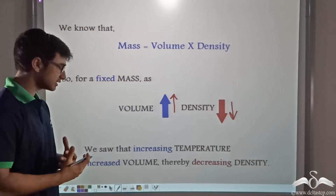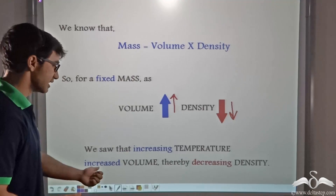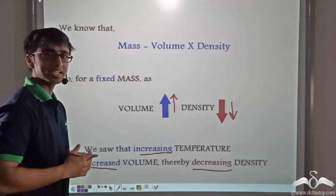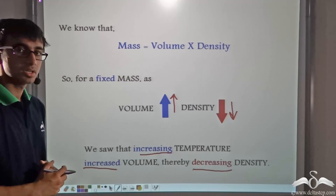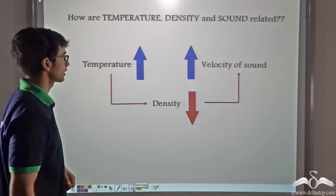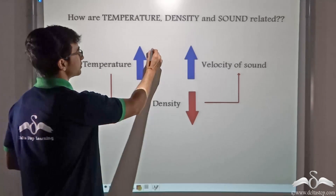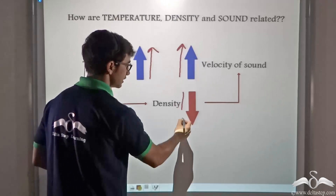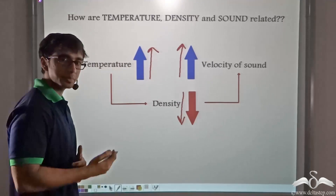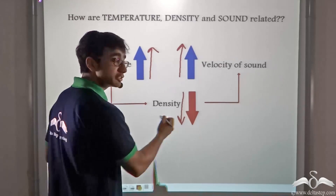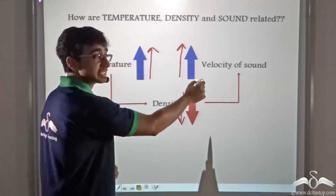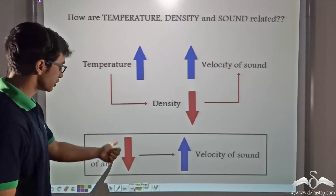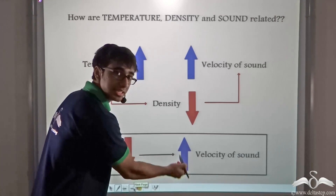So how can we put this? Increasing temperature increases the volume and decreases the density. As we saw, increasing temperature increases the velocity of sound, and increasing temperature also decreases the density. So we can say that if we decrease the density of a medium, the speed of sound increases. As the density of air decreases, the velocity of sound increases.